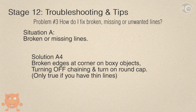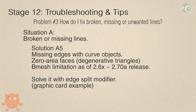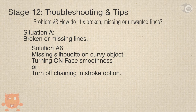Solution A4: broken edges occur on boxy objects — solve it by turning off chaining and turning on round cap. This is only true if you have thin lines, something like line thickness less than 5 pixels. Solution A5: missing edges with curve objects. The main cause is zero area faces known as degenerative triangles on curves. It is a BMesh limitation as of the 2.6x release. Solve that with the edge split modifier — edge split will remove those zero area faces. You can see the graphics card example for such a solution. Solution A6: missing silhouette on curvy objects — solve it by turning on smooth faces in the Freestyle view map option. Another way is to turn off chaining in the stroke option, but be sure that turning off chaining will not cause a problem on other areas.